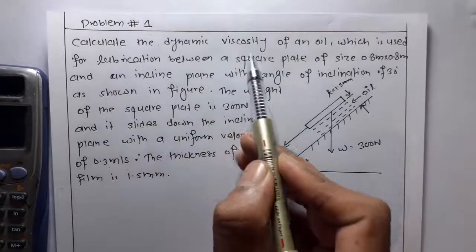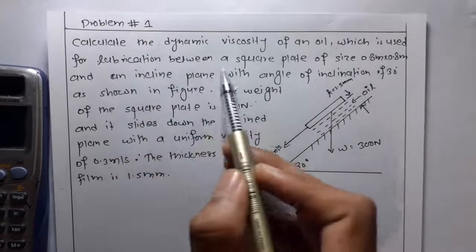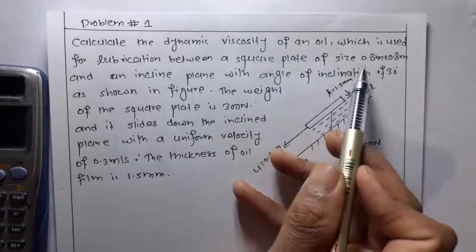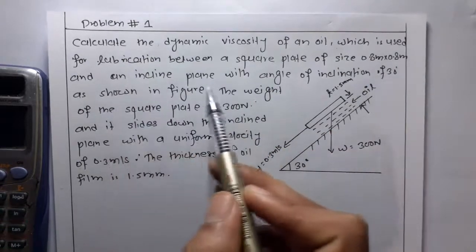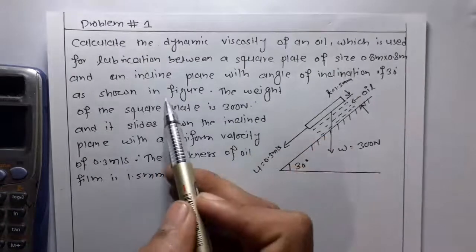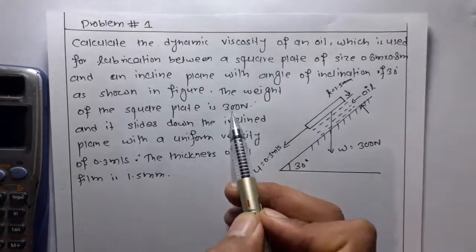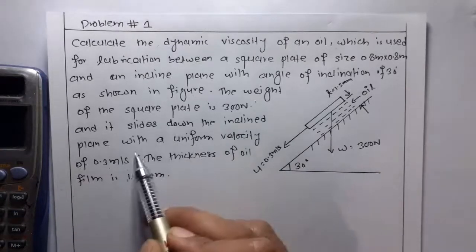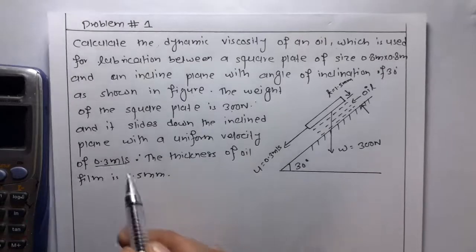The question is: calculate the dynamic viscosity of an oil which is used for lubrication between a square plate of size 0.8 meter by 0.8 meter and an inclined plane with angle of inclination of 30 degrees as shown in the figure. The weight of the square plate is 300 Newton and it slides down the inclined plane with a uniform velocity of 0.3 meters per second.